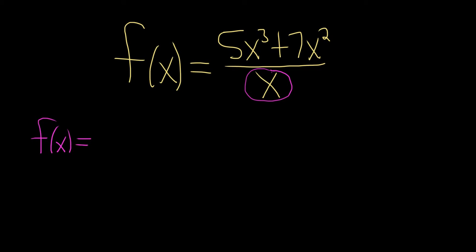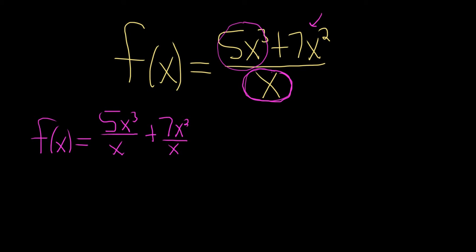So this is going to be 5x cubed over x plus 7x squared over x. Now there are other ways of doing this problem, but this is the easiest way. Whenever you have a fraction and it's a single term — a monomial on the bottom — just break it up. So it'll be 5x cubed over x and 7x squared over x, which we did, and it looks good.